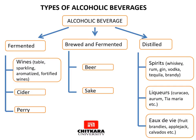Alcoholic beverages are classified into three basic categories. The first is fermented, which includes wines — further classified into table wines, sparkling wines, aromatized wines, and fortified wines. Then we have cider, made by the fermentation of apples, popular in the United Kingdom and the Republic of Ireland. And perry, made from the fermented juice of pears, famous in France, South Wales, and England.